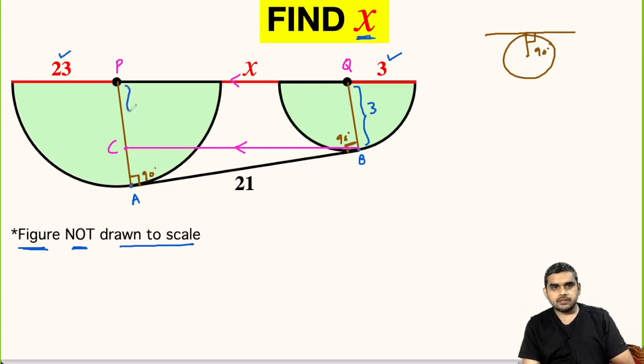Likewise the distance between P and C will also be 3 units. They are parallel to each other, and by symmetry we get this distance as 3 units. Also the radius of this bigger semicircle is 23 units. So 23 minus 3.